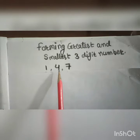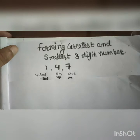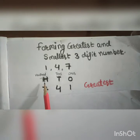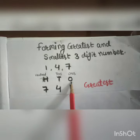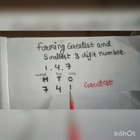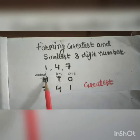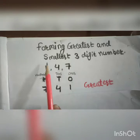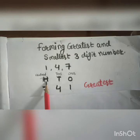Given number is 147. We have to arrange the numbers in descending order. Here we have hundreds, tens, and ones places. When we make the greatest number, we put the largest digit in the hundreds place. The greatest digit here is 7, so we put 7 in the hundreds place.